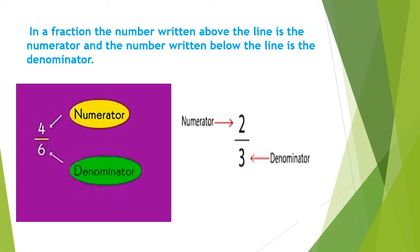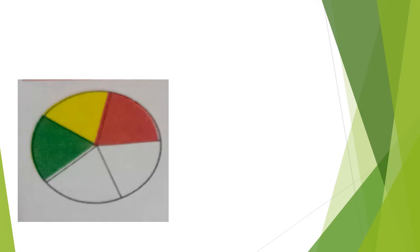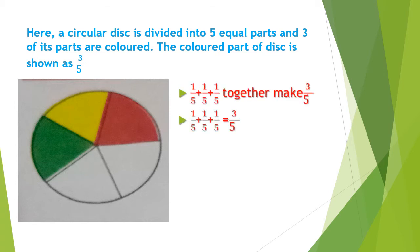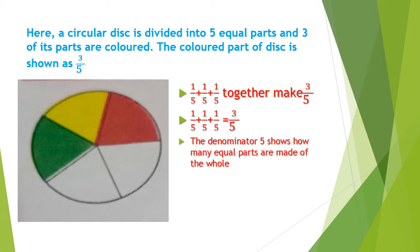You can see another example also: 2 upon 3. Here, 2 is the numerator and 3 is the denominator. Now, a circular disc is divided into five equal parts, but three of its parts are colored. So the colored part of the disc is shown as three upon five, because out of the five parts of the disc, three parts are colored. It means one upon five plus one upon five plus one upon five is equal to three upon five. The denominator five shows how many equal parts are made of the whole, and the numerator three shows how many of those are taken.